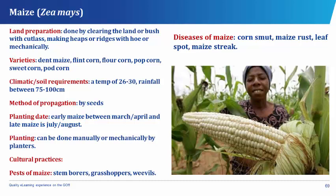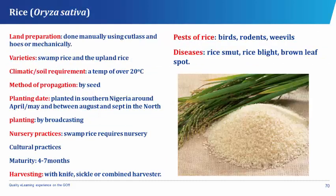The diseases of maize are the corn smut, the maize rust, leaf spot, and the maize streak. Pests that attack maize are the stem borers, the grasshoppers, and the weevils.